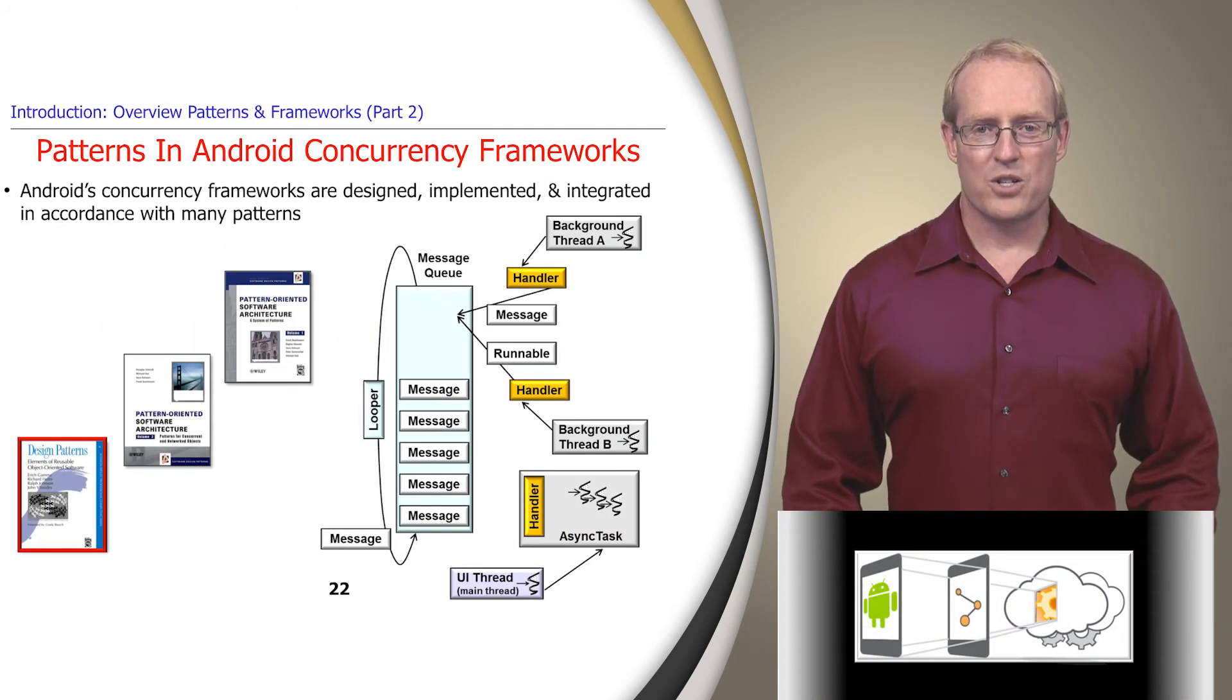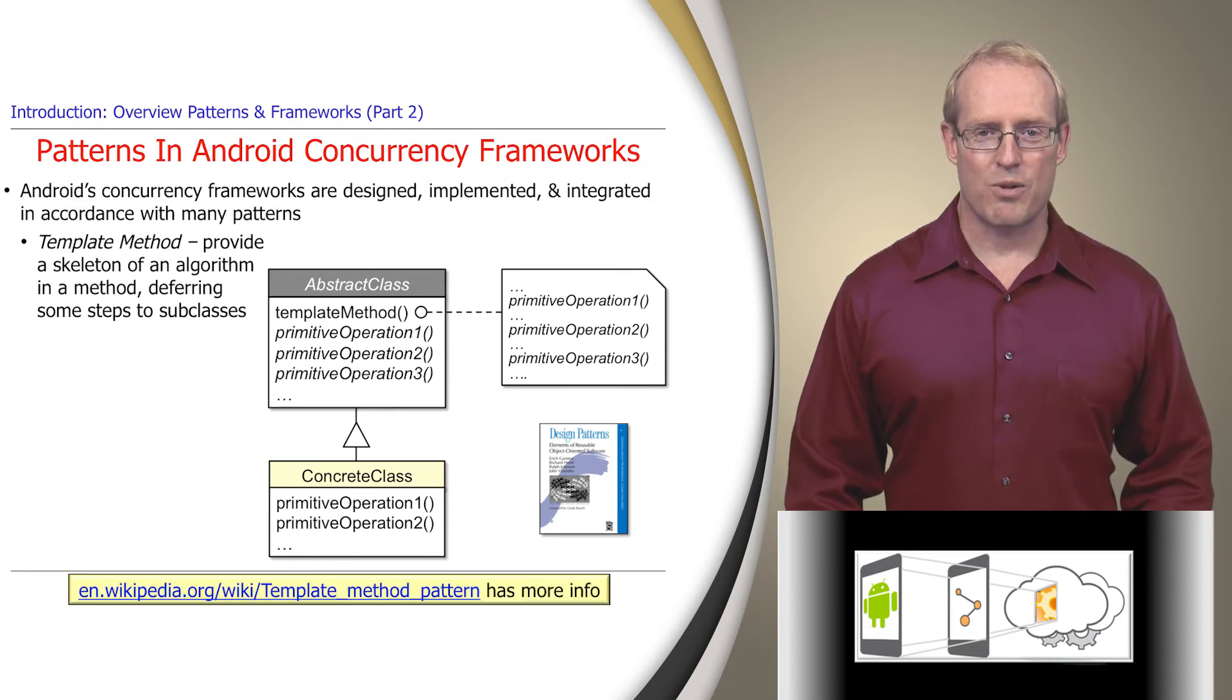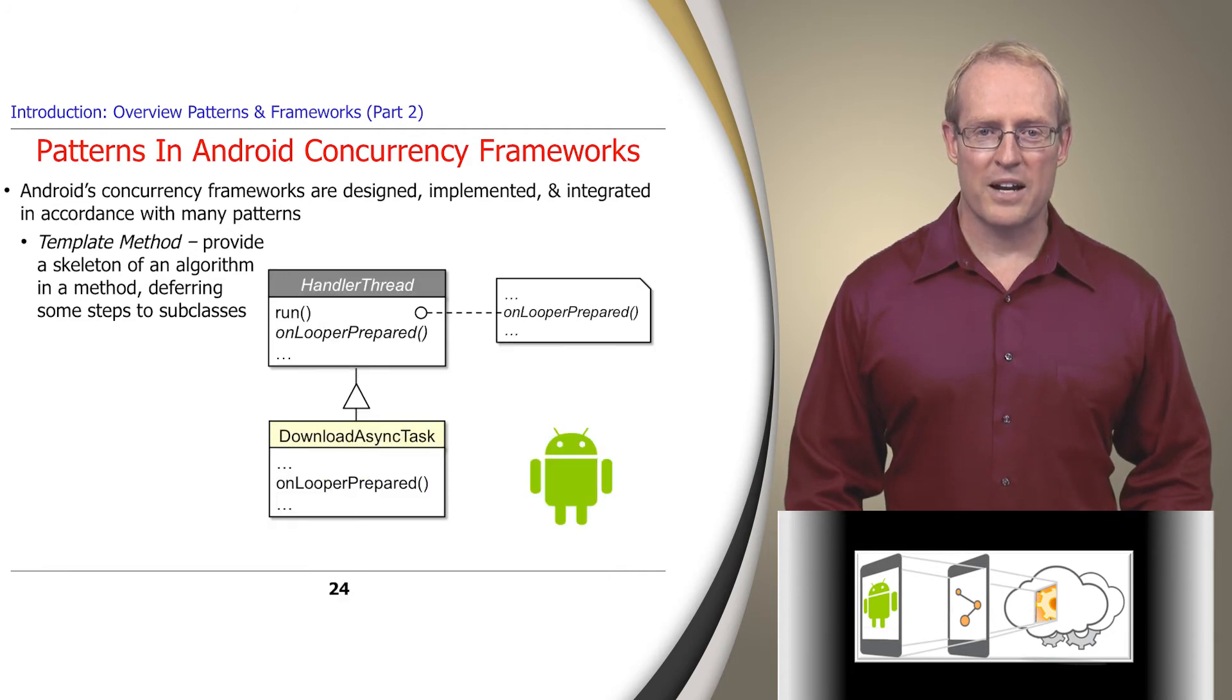Although the Gang of Four patterns don't focus on concurrency and communication per se, these patterns are applied in many object-oriented frameworks, including the Android concurrency and communication frameworks. For example, the template method pattern provides a skeleton of an algorithm in a method deferring some steps to subclasses. The Android HandlerThread class applies this pattern to allow subclasses to create their desired handlers by overriding the onLooperPrepared hook method, as shown in this upcoming video.